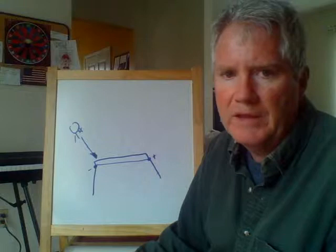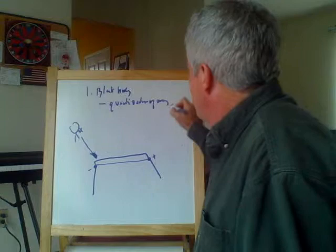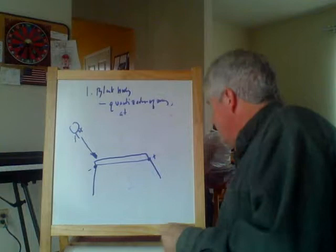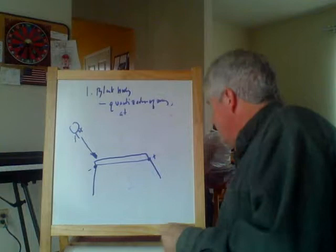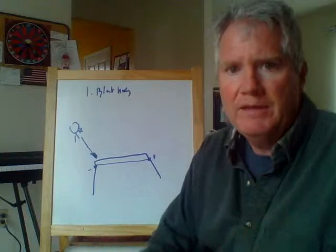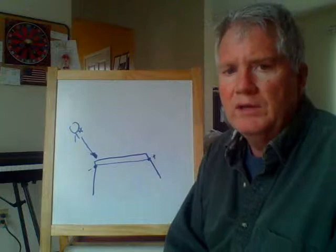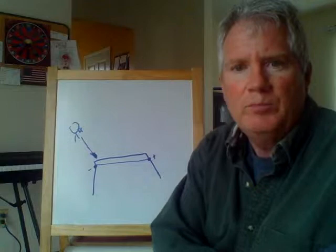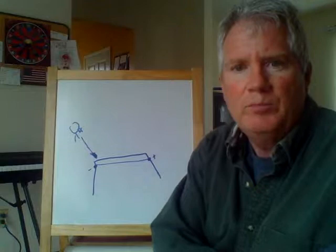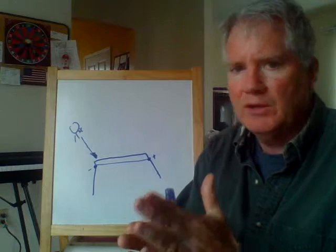So to summarize: from black body radiation, Planck showed that the energy states of matter — basically of the atom — were quantized, with only certain discrete energy states being observed. From the photoelectric effect, Einstein postulated that light itself can't be solely modeled as a wave — it also has particle-like characteristics. This was the first use of the term 'wave-particle duality': light behaves like a wave in some contexts, and like a particle in others, depending on how you look at it.